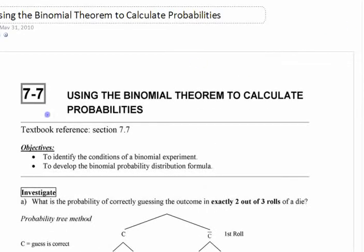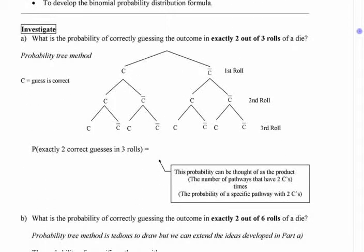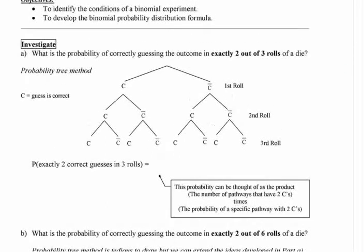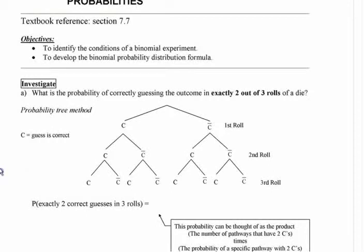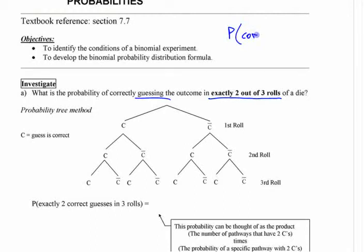Let's use this situation: if you're rolling some dice and you want to know what's the chance, if you're trying to guess the outcome of rolling a die three times, what's the chance you're going to guess exactly two out of three rolls? You could count all the different outcomes. What's your chance on any one individual roll? The probability of guessing correct — what's your chance of guessing correctly on any one single roll?